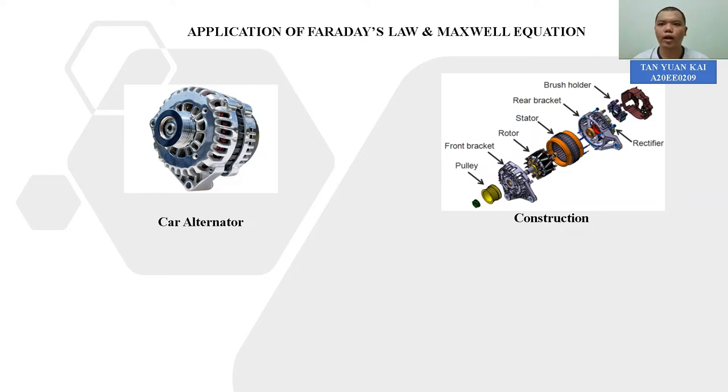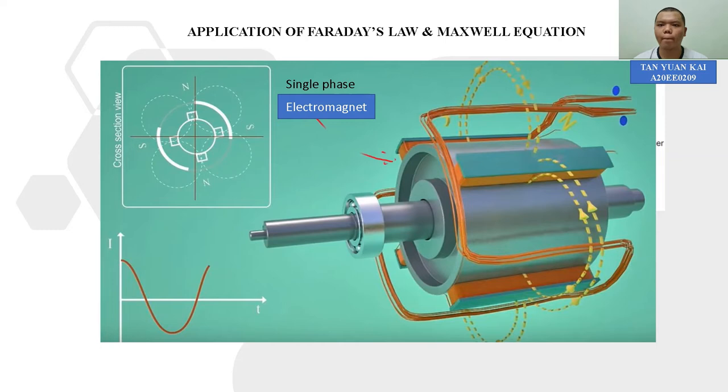First, we go to the car, then we turn on the switch. There is a power supply to the rotor, making the rotor become electromagnetic. Then there is a mechanical energy transfer through the drive belt to the pulley, making the pulley rotate. Then the rotor starts to rotate as well.